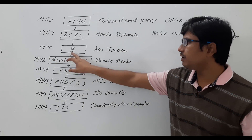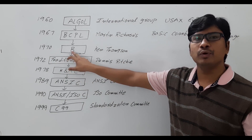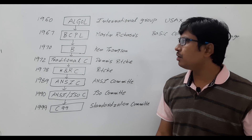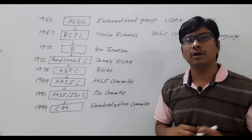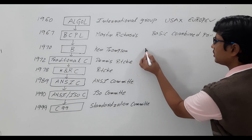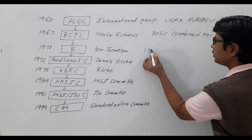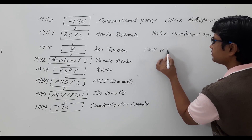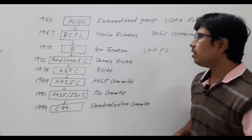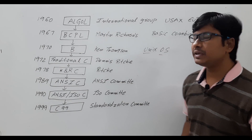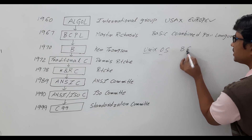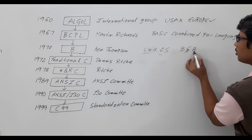Using the features of BCPL, in 1970 Ken Thompson developed a programming language called B. Using this B programming language, the researchers developed the Unix operating system. However, the problem with both B and BCPL is that they are typeless programming languages.